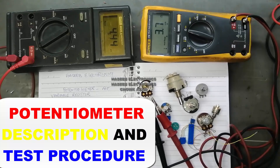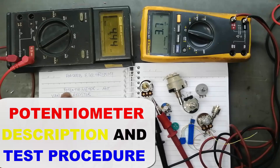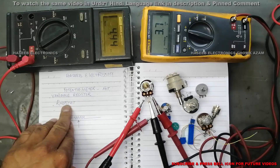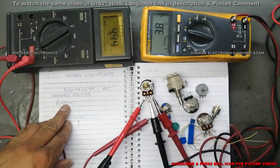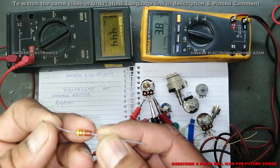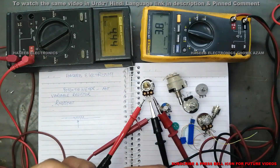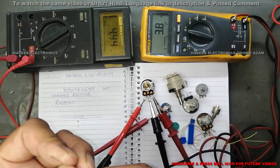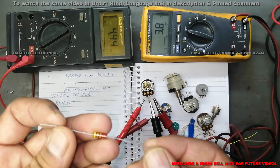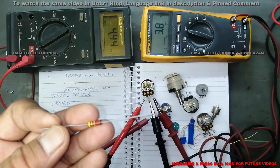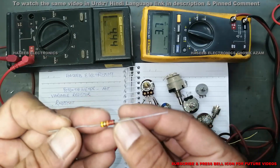Welcome to Hasheep Electronics. In this video I am going to discuss about the potentiometer and variable resistance. A resistor is a component which opposes the flow of electrons, which makes resistance in the flow of electrical current.